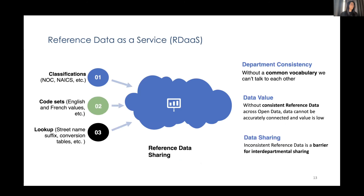Next is what we call Reference Data as a Service, or RDAS. Reference data is defined as the set of permissible values used when describing data. RDAS ties up all the services previously mentioned and provides a single point of access to connect to reference data such as our classifications and code sets. The main goal is to have a repository that can share high-quality reference data for use by everyone in the agency. One key approach is ensuring that IDs are attached to our metadata so it can be consistently referenced through this service.